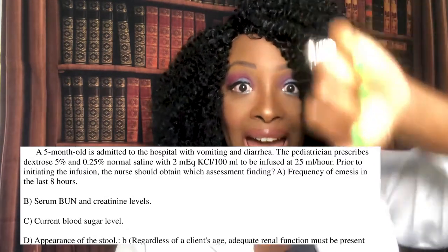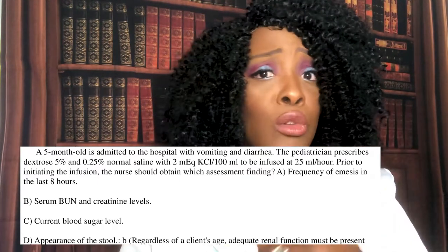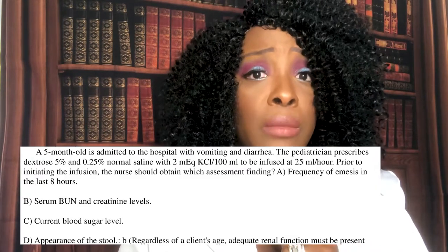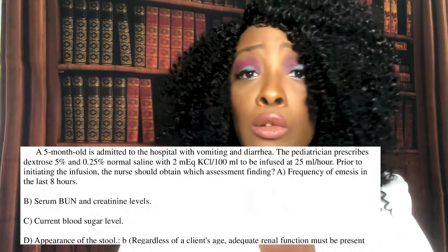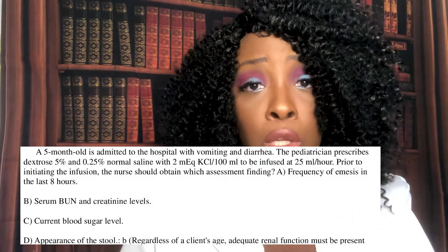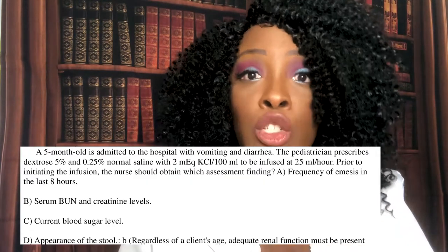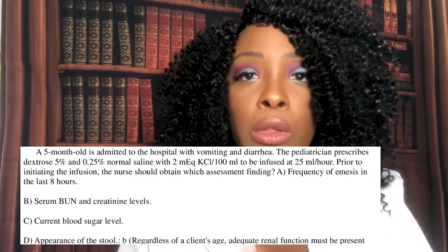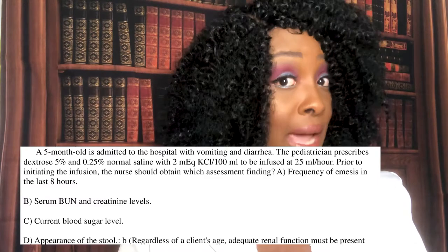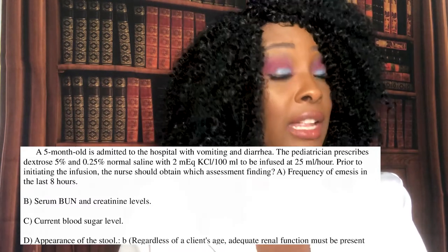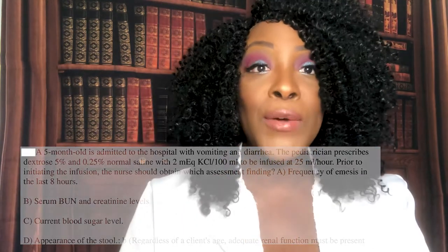If the BUN and creatinine are elevated, that tells you kidney function is down, meaning you do not give the potassium. Call the provider and say, 'The BUN and creatinine are elevated — are you sure you still want me to give potassium?' If the doctor still says yes, you tell them to come give it themselves, because you are not losing your license. When you know your stuff, you can be bold, and healthcare providers respect that. Always check BUN and creatinine before giving potassium.